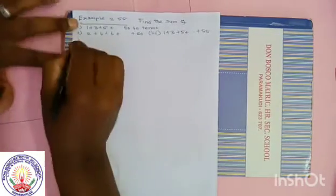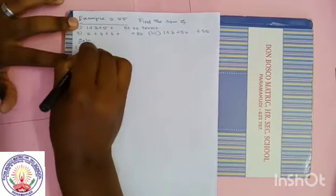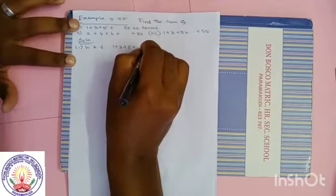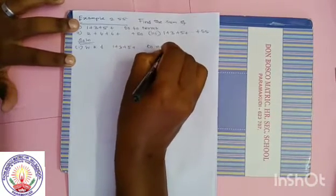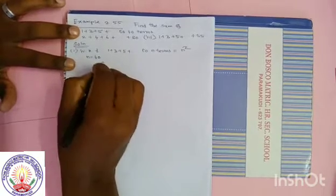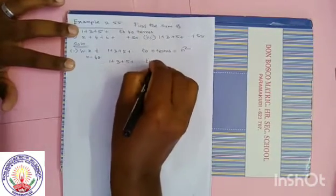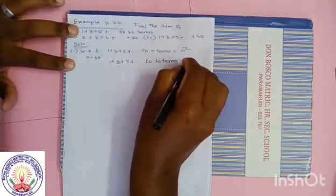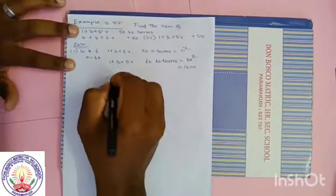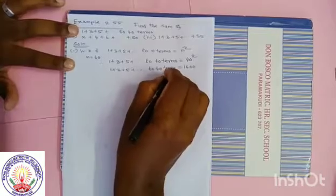Let us solve question number 1. Solution: 1 plus 3 plus dot dot dot to 40 terms. We know that 1 plus 3 plus 5 plus dot dot dot to n terms is equal to n square. Here n is equal to 40. Therefore, 1 plus 3 plus 5 plus dot dot dot to 40 terms is equal to 40 square. 40 square means 4 square is 16, so answer is 1600.